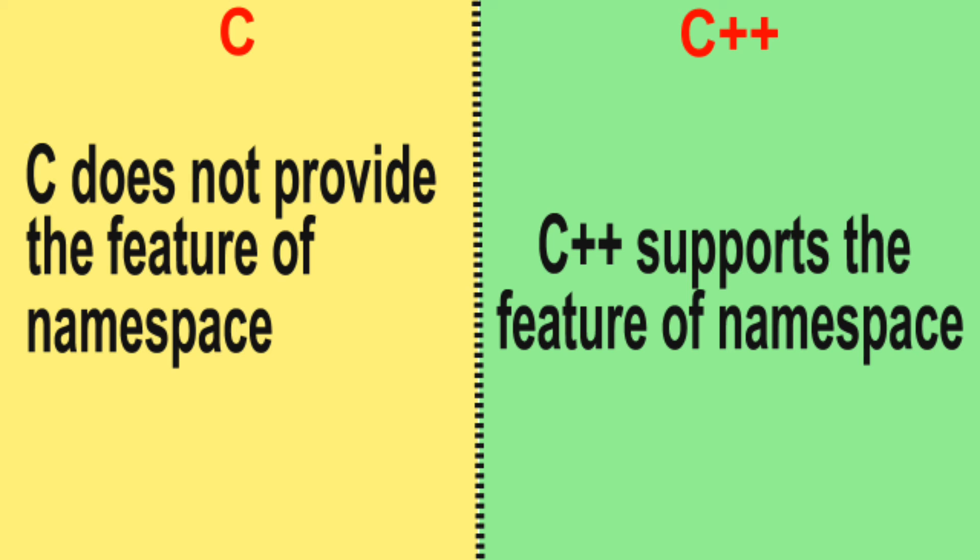Difference number 11: C does not provide the feature of namespace. C++ supports the feature of namespace.